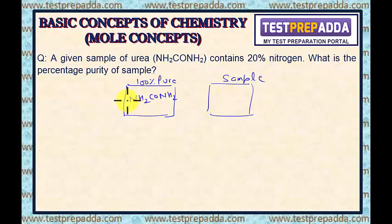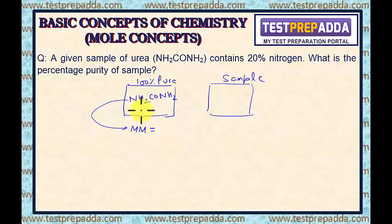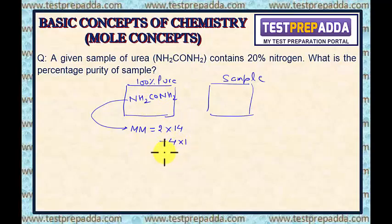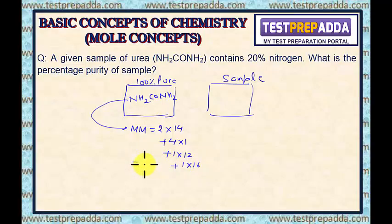To find the percentage of nitrogen, first get the molar mass. There are two nitrogen atoms: 2 × 14. Four hydrogen atoms: 4 × 1. One carbon atom: 1 × 12. One oxygen atom: 1 × 16. The molar mass comes as 60 grams. Out of 60 grams, the contribution of nitrogen is 2 × 14 = 28. So the percentage of nitrogen in the pure sample is 28/60 × 100 = 46.67%.